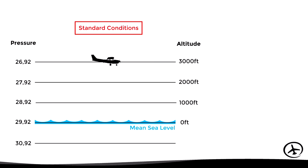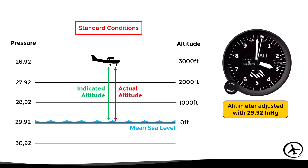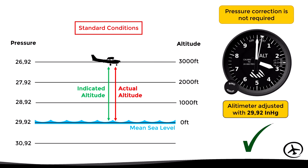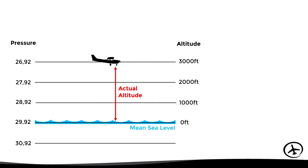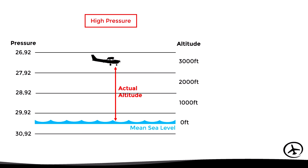Under standard conditions with the default altimeter setting, the indicated altitude and the actual altitude will be the same, and therefore a correction for pressure is not required. However, if there are higher than standard pressure conditions, the isobars will move upwards and therefore the pressure at sea level will be higher than 29.92 — in this particular example, it is 30.40.